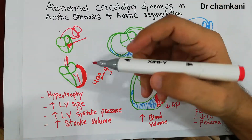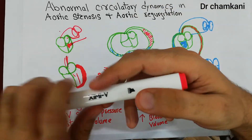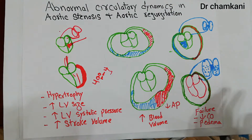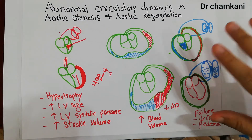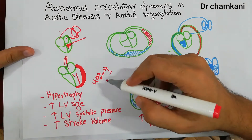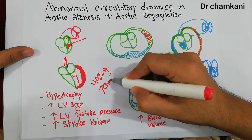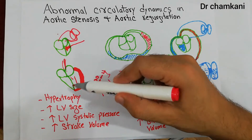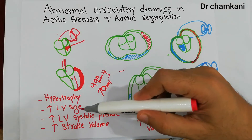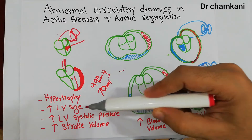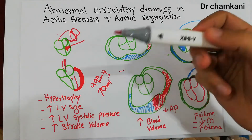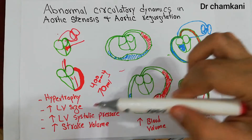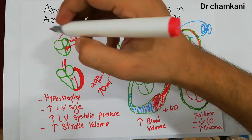The stroke volume — the amount of blood the left ventricle pumps in each contraction — also increases. Normally it is around 70 ml in a 70 kg human being, but due to hypertrophy, increased left ventricular size, and increased left ventricular systolic pressure, the stroke volume increases as well. All these changes — hypertrophy, increased LV size, increased LV systolic pressure, and increased stroke volume — are basically compensatory changes.